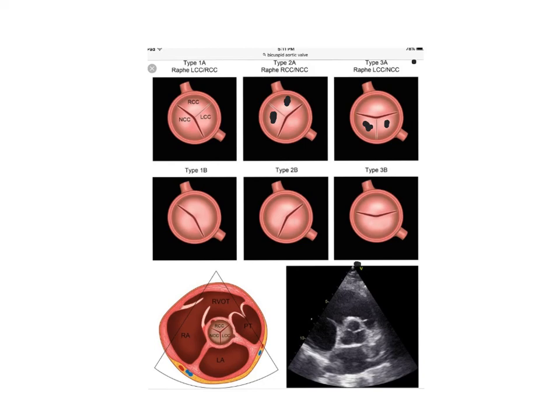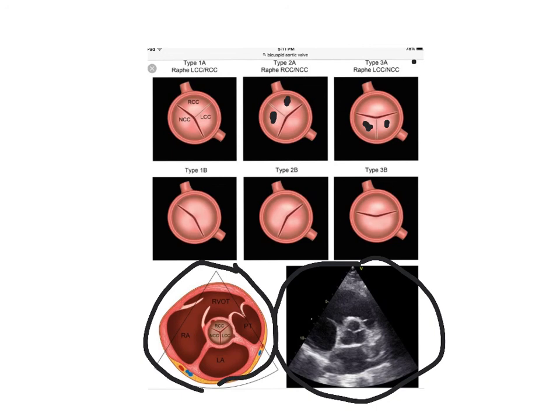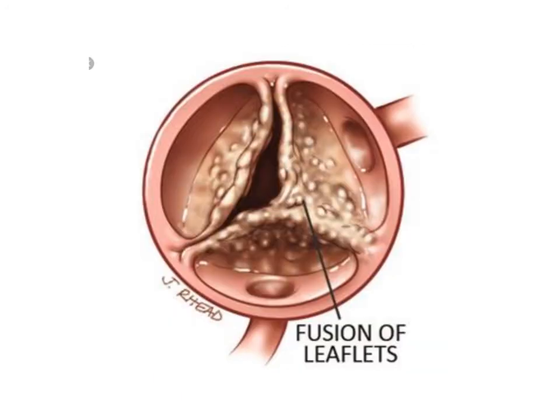Down here you see an echo — this looks like a three-leaflet valve, so it's normal, like the drawing over here. Let's make this the last picture. I just wanted to show you how a thickened aortic valve gets these little tiny bumps all over the place — that's the tissue becoming thicker and thicker.